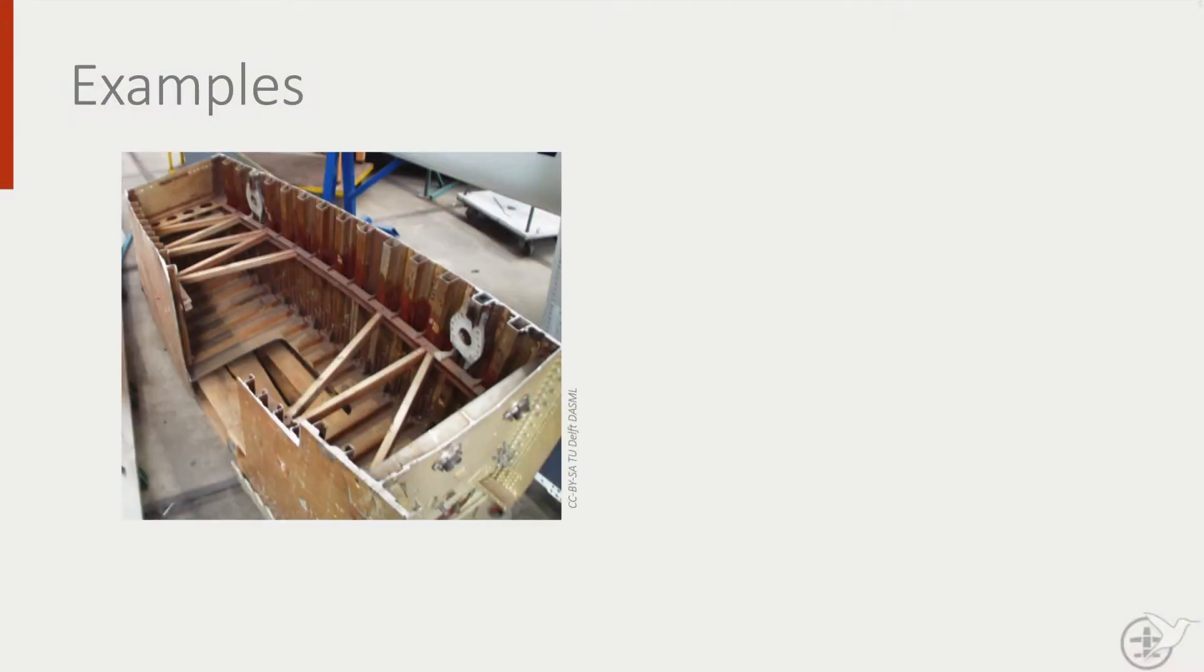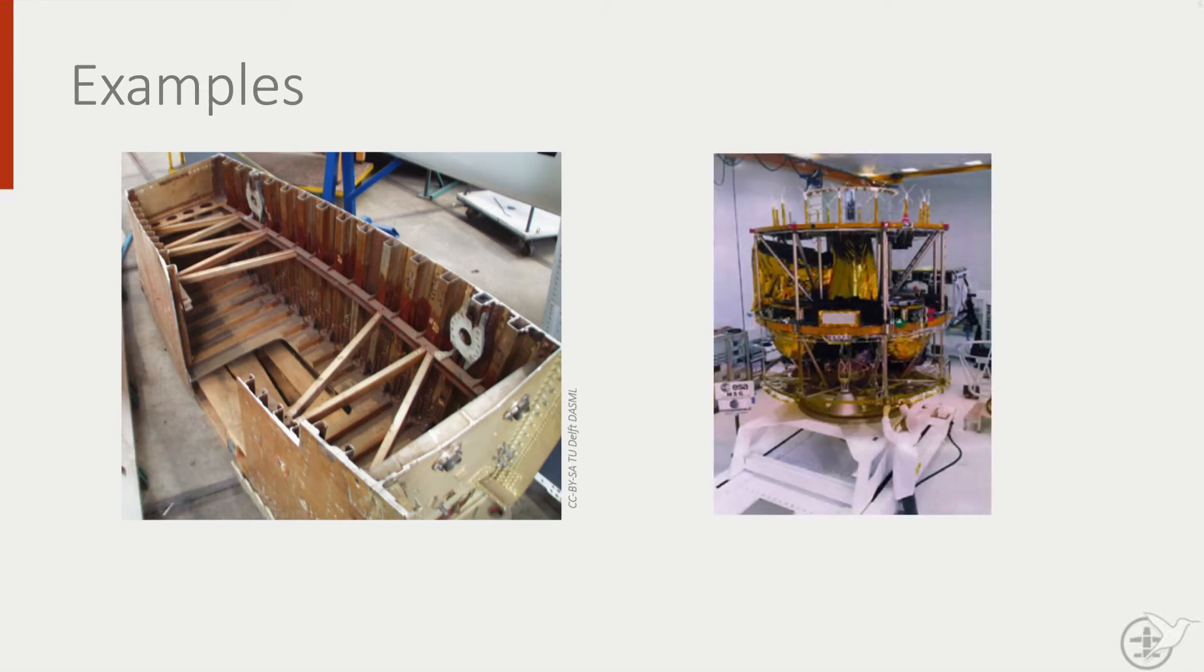Truss structures are still used in aerospace, only more inside of structures to transfer loads, such as ribs and wings or in the center section of an aircraft. It is also used a lot in space structures. However, it is hardly used anymore as the primary structure of a fuselage or a wing.